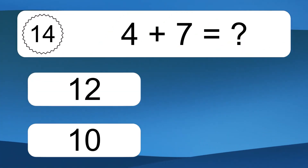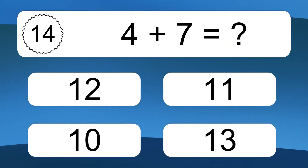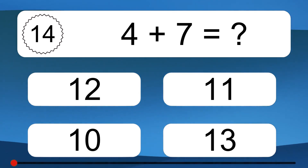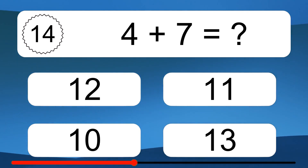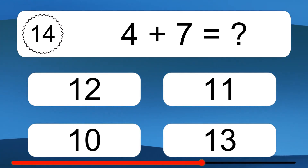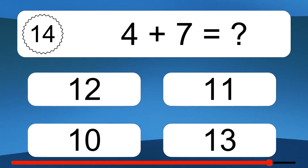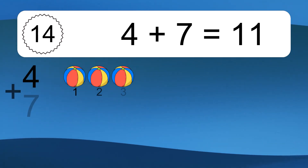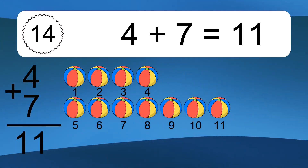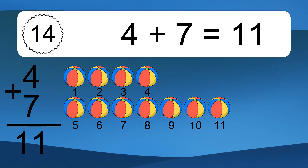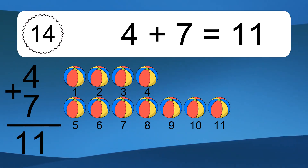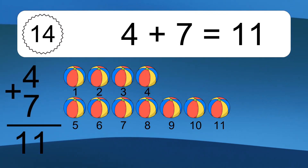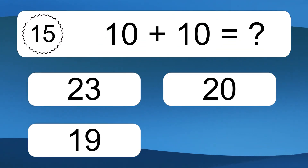4 plus 7 equals what? 4 plus 7 equals 11. Let's count it: 1, 2, 3, 4, 5, 6, 7, 8, 9, 10, 11.